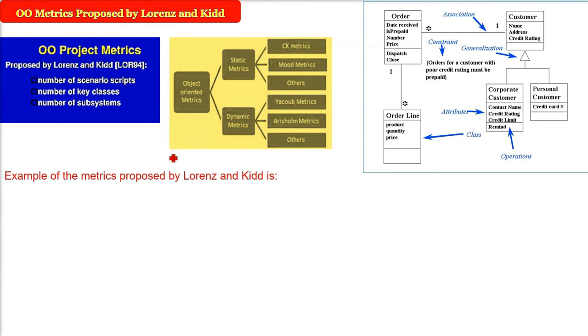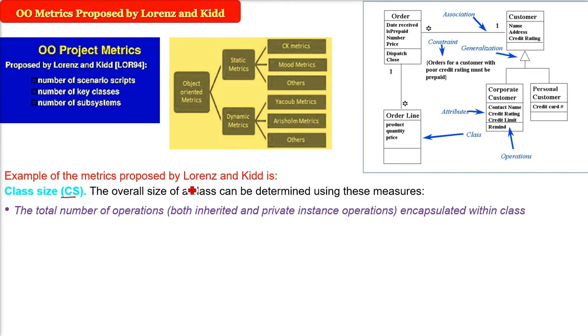So let us take the example of these metrics which are proposed by Lorenz and Kidd. The first one is the class size. Now the overall size of the class, how can we determine it? We have certain measures. Operation, the total number of operations, it can either be inherited or it can be private also, encapsulated within a class. That is the functions.